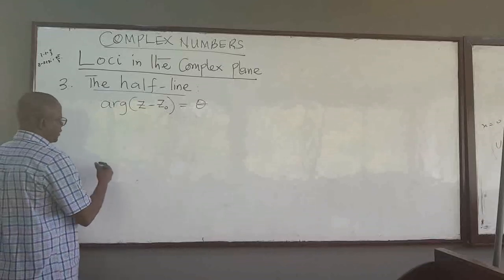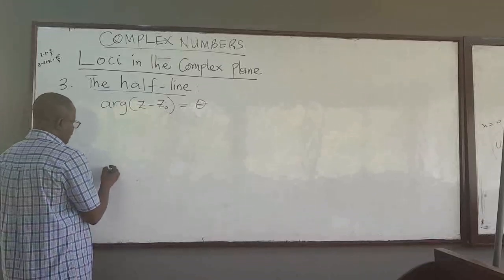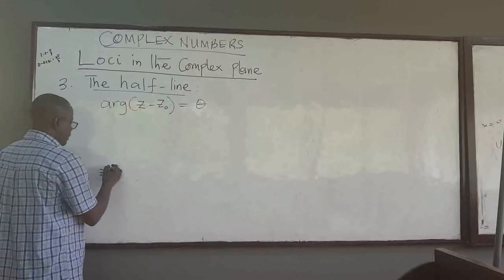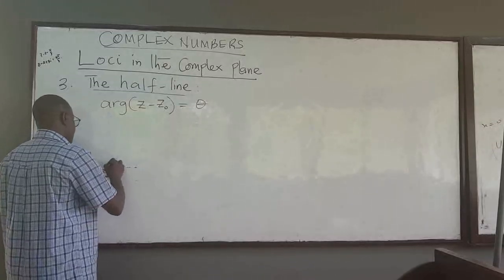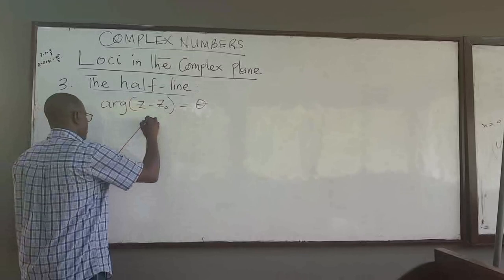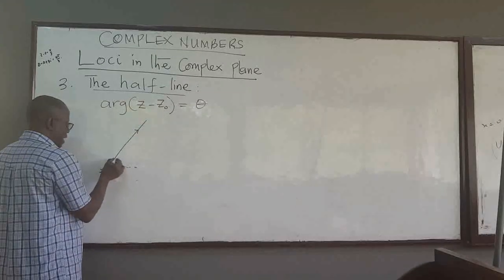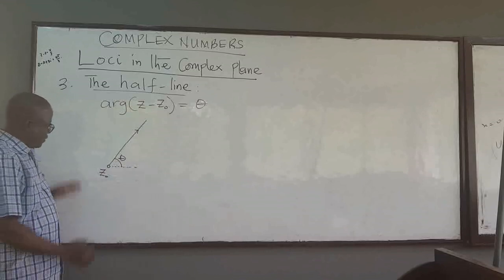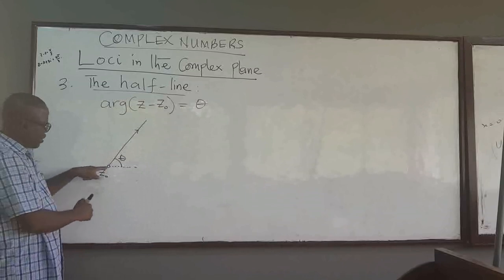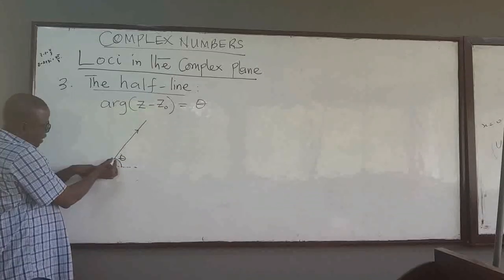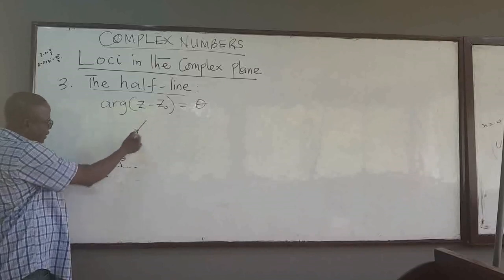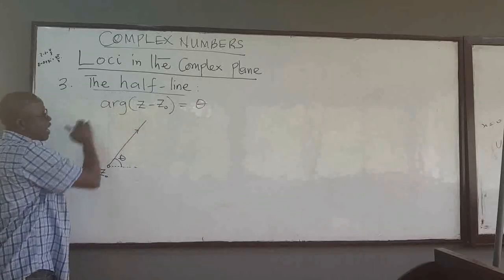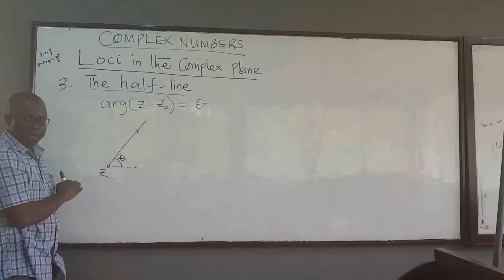This is the locus of points starting from a point, let's call it z naught. Z naught meets an angle, and then this locus of points moves in a direction making an angle of theta with the positive x-axis. So this is the complex plane — you start from a point z naught, make an angle of theta, and draw a line moving away from z naught with that angle. That is all it describes, and it is described by this equation.